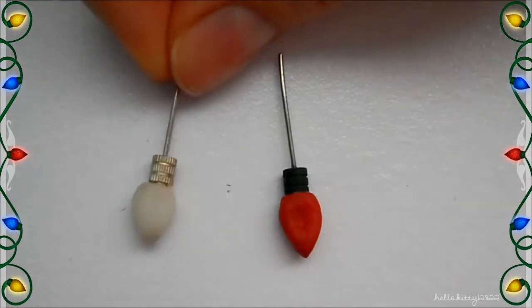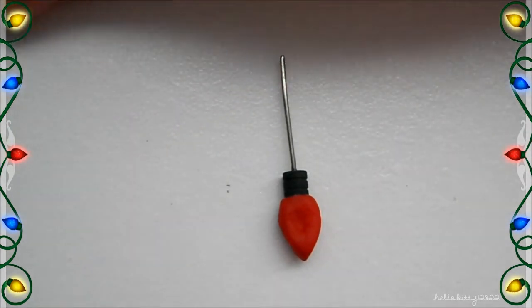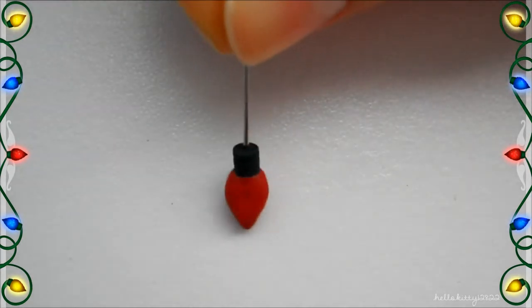Once they were dry, I painted the top part a dark green and then the light bulb was red and the other one I painted a yellow.